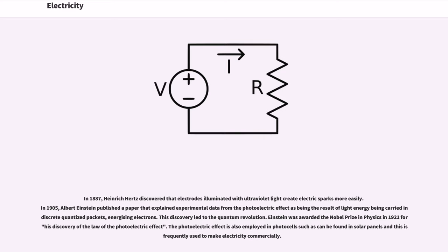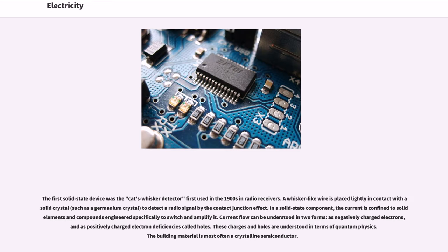In 1887, Heinrich Hertz discovered that electrodes illuminated with ultraviolet light create electric sparks more easily. In 1905, Albert Einstein published a paper that explained experimental data from the photoelectric effect as being the result of light energy being carried in discrete quantized packets, energizing electrons. This discovery led to the quantum revolution. Einstein was awarded the Nobel Prize in Physics in 1921 for his discovery of the law of the photoelectric effect. The photoelectric effect is also employed in photocells such as can be found in solar panels, and this is frequently used to make electricity commercially. The first solid state device was the cat's whisker detector, first used in the 1900s in radio receivers.